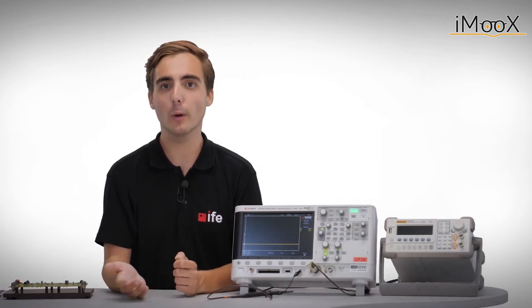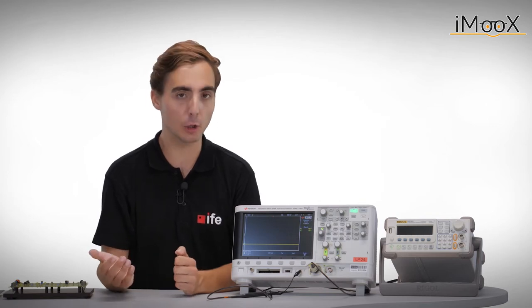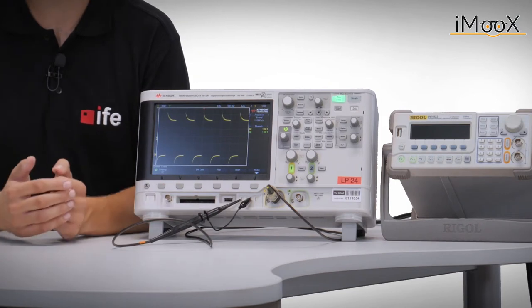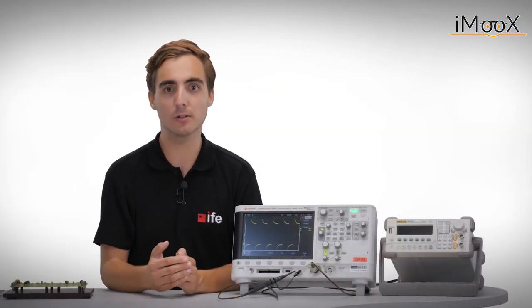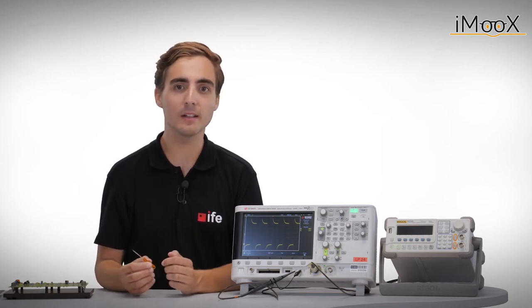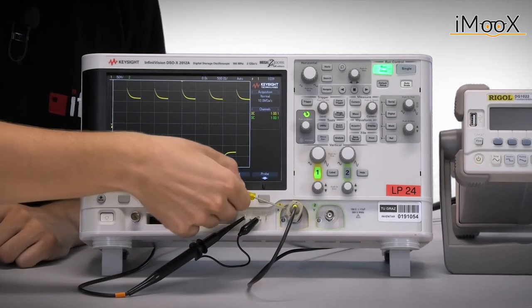A simple way to calibrate this compensation capacitor is to use the scope and a rectangular signal. In this case, we will use the demo signal that is already provided by most scopes. We can see that the rectangular signal does not appear to be rectangular. Therefore, the compensation capacitance has to be adjusted by using a screwdriver until a rectangular signal is visible.